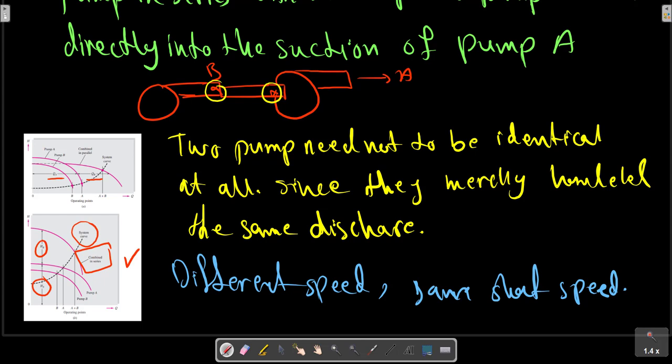The need for a series arrangement implies that the system curve is steep. It requires higher head than either pump A or B can provide. The combined operating point head will be more than either A or B as shown in the picture, but not as great as their sum.